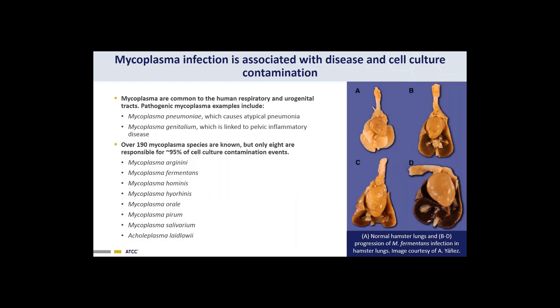Mycoplasma infection not only affects cell cultures, but is also associated with human and animal disease. In humans, mycoplasmas are common in the respiratory and urogenital tracts and cause diseases like pneumonia and pelvic inflammatory disease. Mycoplasmas can also infect animals, as the photo on the right depicts an infected hamster lung — note the gross anatomy of a healthy lung in photo A compared to photos B through D, which show the progression of mycoplasma infection. There are over 190 known mycoplasma species, but only eight are responsible for about 95% of all cell culture contaminations.